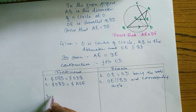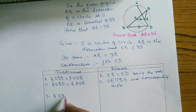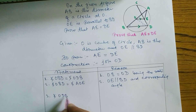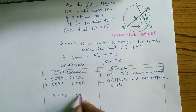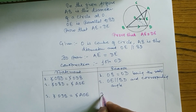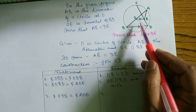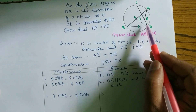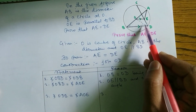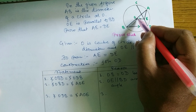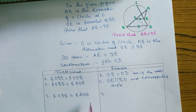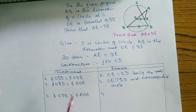Statement 3: Angle ODB is equal to angle AOE. The reason is from statements 1 and 2 — since the left-hand sides are equal, the right-hand sides are also equal.